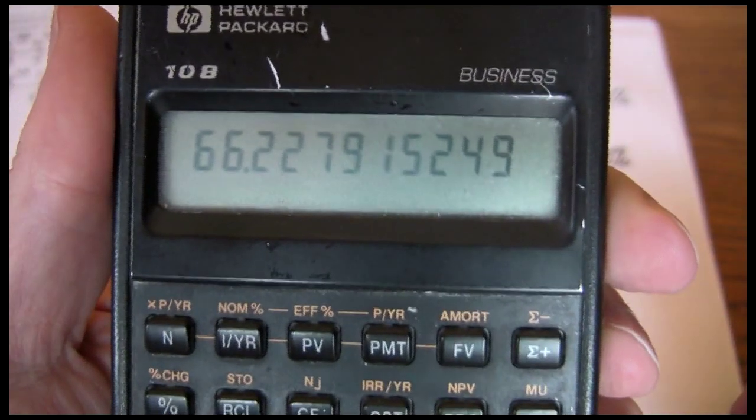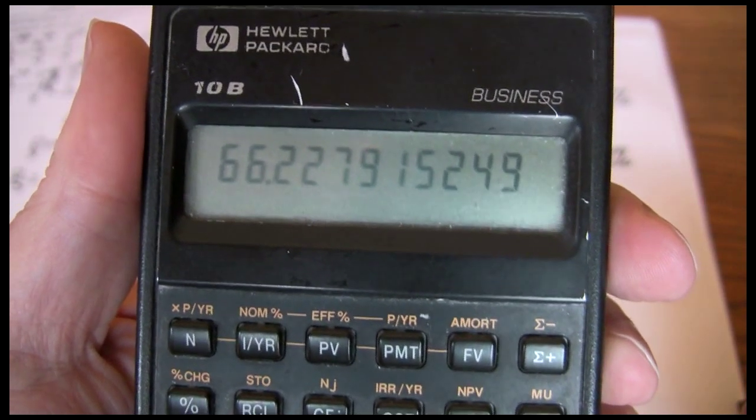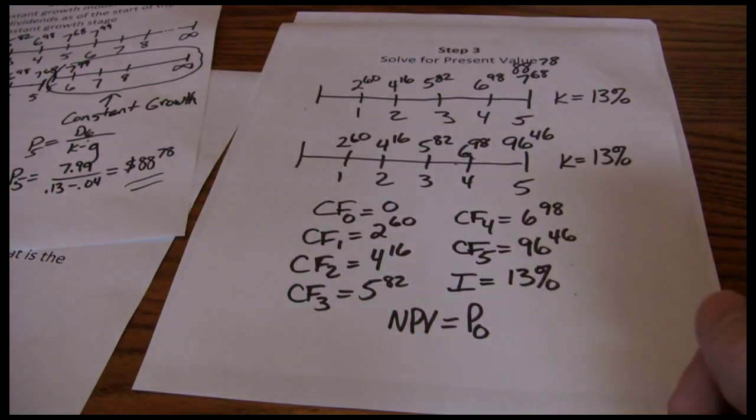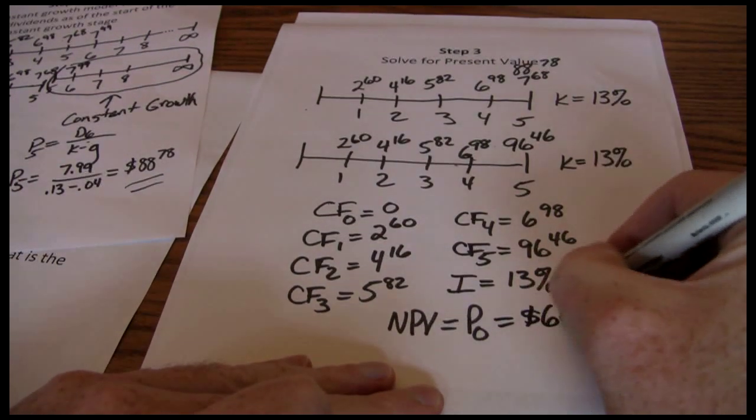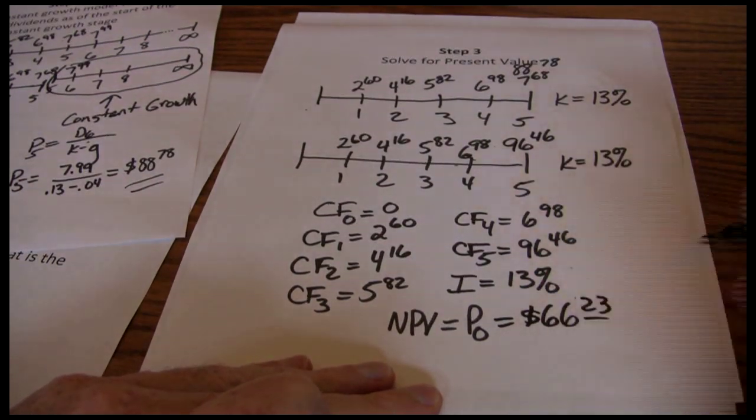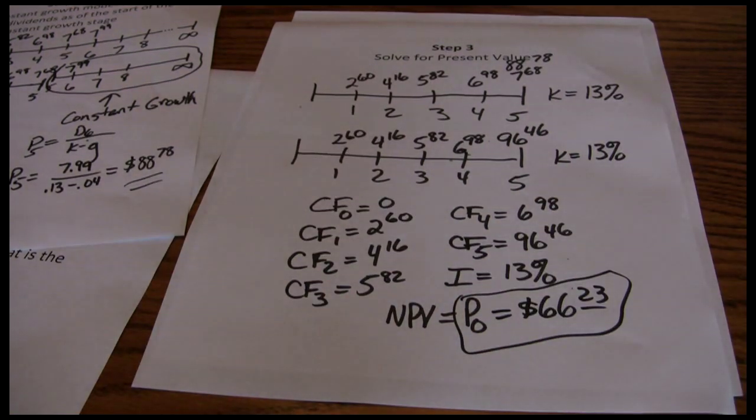That gives me the current stock price or current value of the stock today, which is $66.23. That's my final answer. The non-constant model is complete.